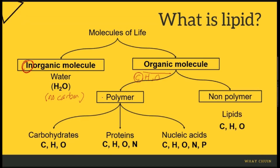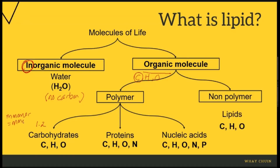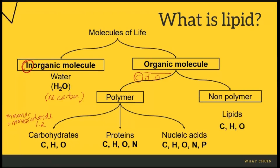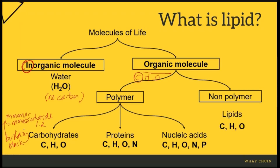From organic molecules, we can further divide them into polymer and non-polymer. Carbohydrates are a polymer because these large molecules consist of monomers called monosaccharides — iaitu carbohydrate yang kita study pada 1.2, setiap contoh dia punya building block yang berulangan (repeating units). Every repeated unit of the same type is called a monomer; for carbohydrates the name is monosaccharide, and each monosaccharide consists of carbon, hydrogen, and oxygen.